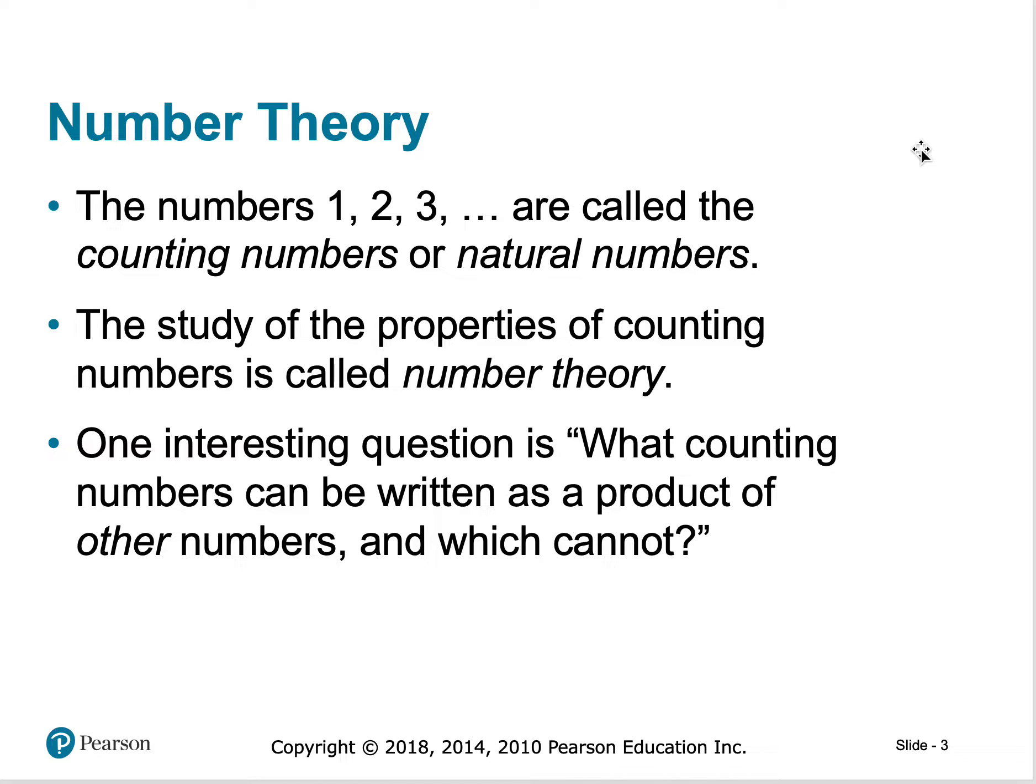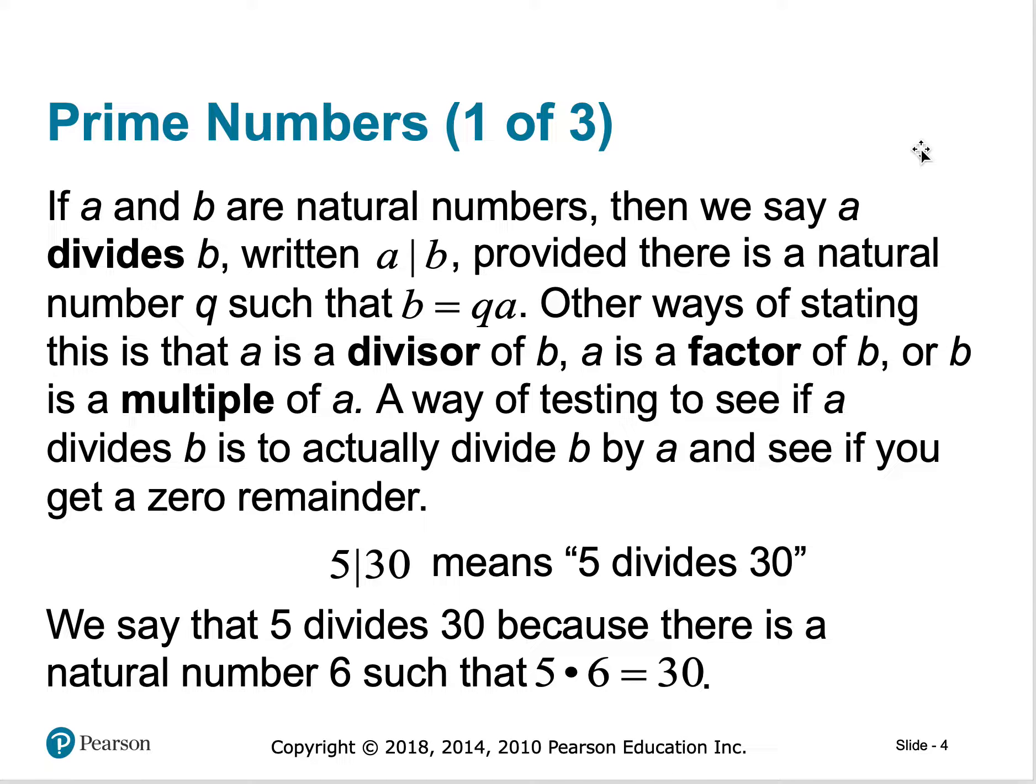Prime numbers are any numbers whose factors are itself and one. One is not a prime number because it does not have two factors. One and one are its factors, not two distinct numbers.